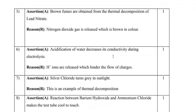Question 5: Brown fumes are obtained from the thermal decomposition of lead nitrate. The reason is that nitrogen dioxide gas is released, which is brown in color. Both are correct — brown fumes are indeed produced when lead nitrate undergoes thermal decomposition, and nitrogen dioxide gas is brown. So A is the answer.